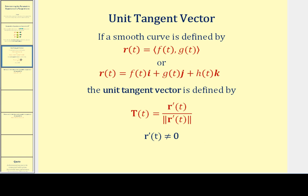One more thing to review: in order to find a unit tangent vector, we need to find the derivative of the given vector valued function and then divide by its magnitude. We don't have to find the unit tangent vector — a tangent vector will do — but it is common to use the unit tangent vector's components as the direction numbers.